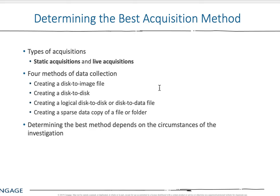Acquisition methods — I want to focus on four items: creating a disk-to-image file, or disk-to-disk file, or a logical disk-to-disk, or a disk-to-data file. Read about those differences. Creating a sparse data copy of a file or folder — you're really selecting parameters of that. Everything requires that you use a bit copy initially.